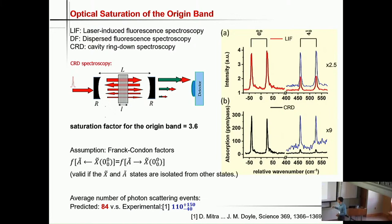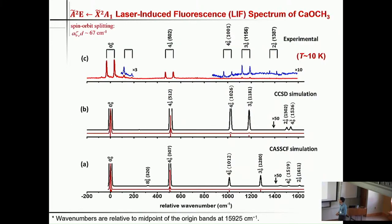About one year after the paper, John's group did an experiment and found that the experimental value is 110. We think we were pretty close — at least the order of magnitude. As I was bragging about our success, some of you might be wondering what's going on with transitions that the calculations did not predict.